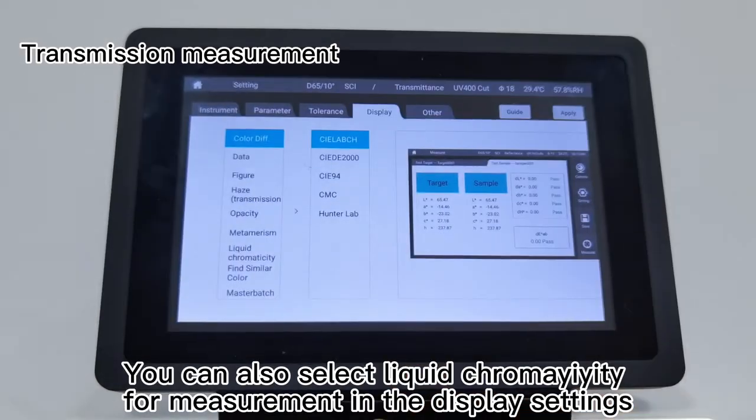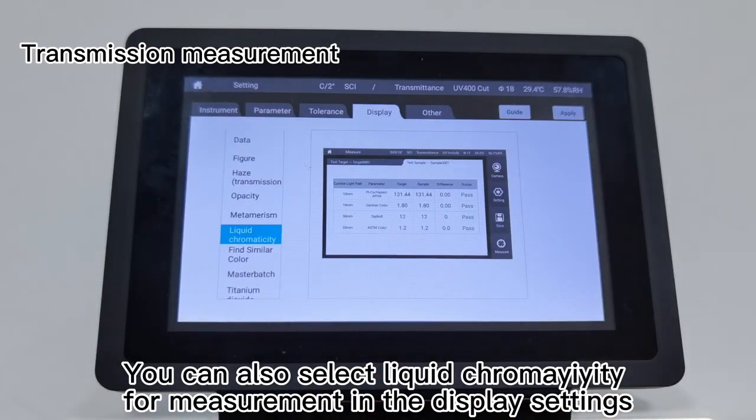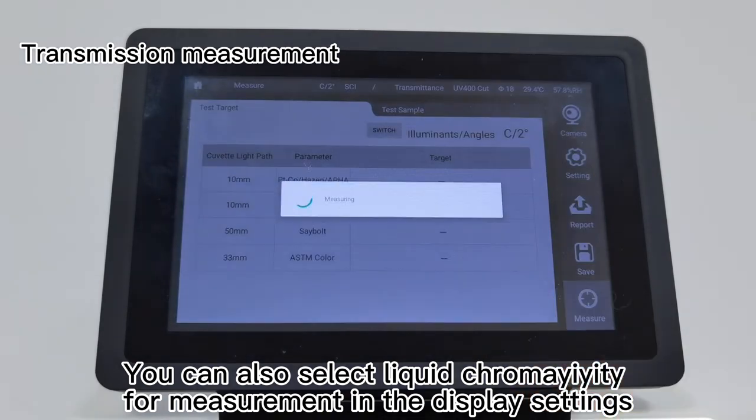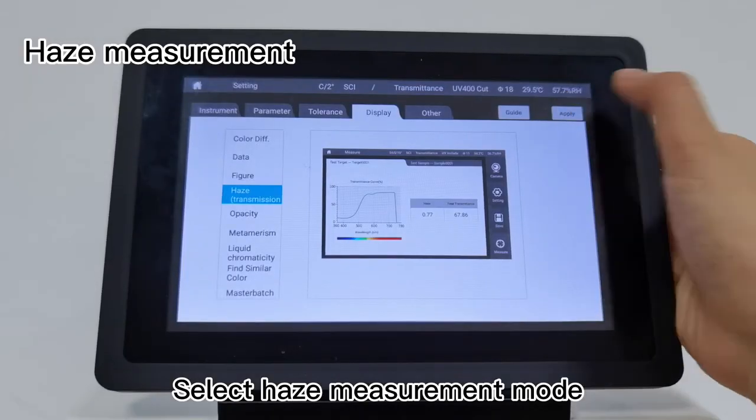You can also select Liquid Chroma E2 for measurement in the display settings. Haze measurement: Select haze measurement mode.